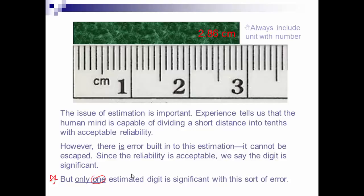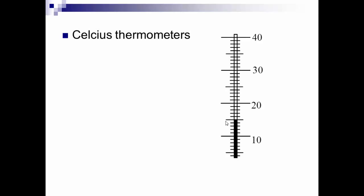But just because it is estimated doesn't mean that it's not significant. In fact, in this particular case, all three of these digits are significant. Because the last one is an estimation, it still counts because it tells us how close it is to the 8 or to the next one up, which is a 9. It confirms that the 8 is an accurate certain measurement. The issue of estimation is important. It tells us we know that human mind is capable of dividing short distances into tenths. However, there is error built into this because it is an estimate. So, as I said before, only one estimated digit is significant. Make sure that when you're writing your measurements down that it's only the last digit that is estimated. And, of course, always remember your units.